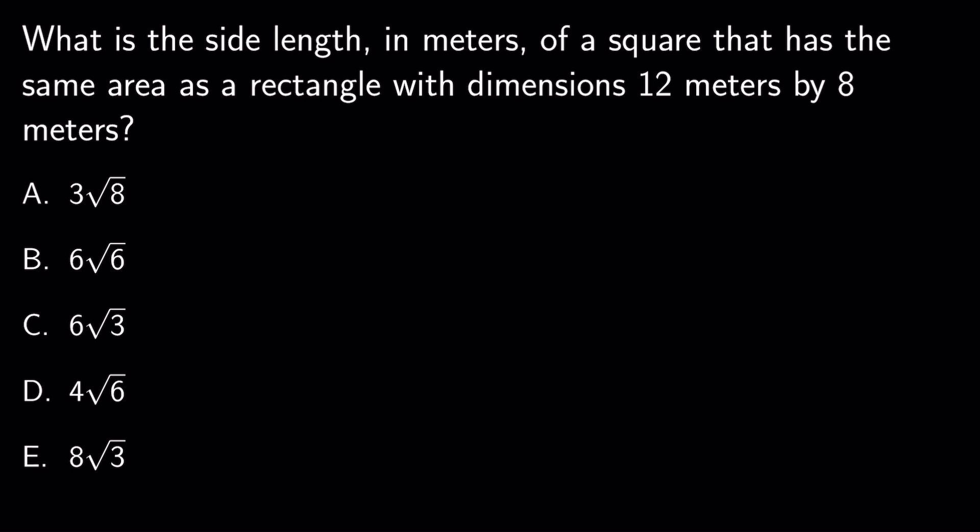What is the side length in meters of a square that has the same area as a rectangle with dimensions 12 meters by 8 meters?